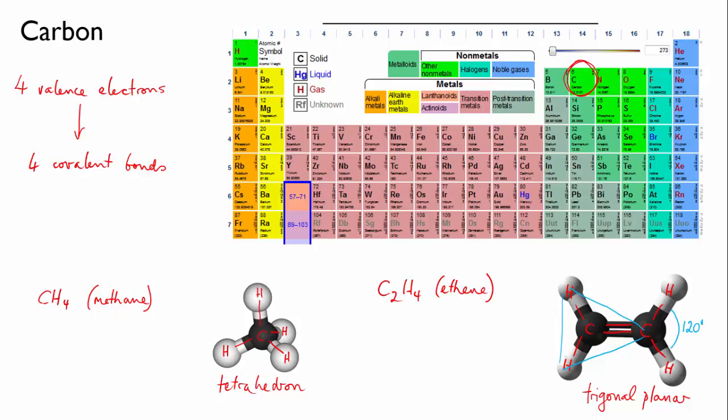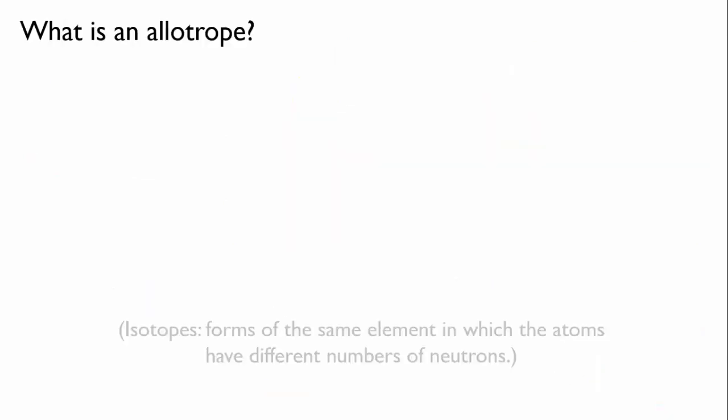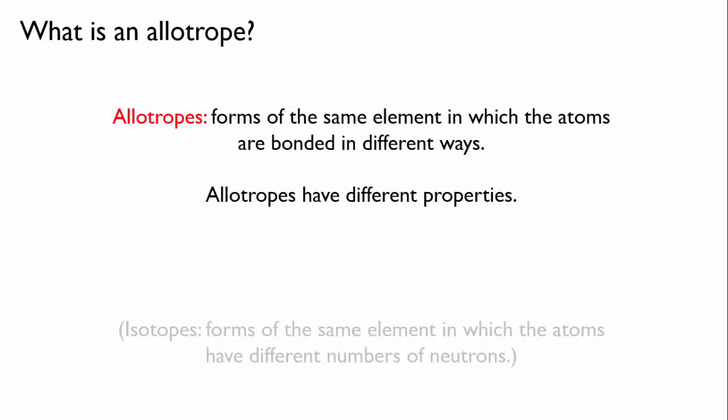So if we compare these two, methane and ethene, you can see that carbon is able to form at least two different bond arrangements. And what's the significance of that? Well, methane and ethene are two different compounds. They're made up of more than one element and they have different numbers of atoms making up their molecules. But what if we only use carbon atoms? Can we get different bonding then? The answer is yes, we can. And when you get different forms of the same element that have different bonding, we call them allotropes.